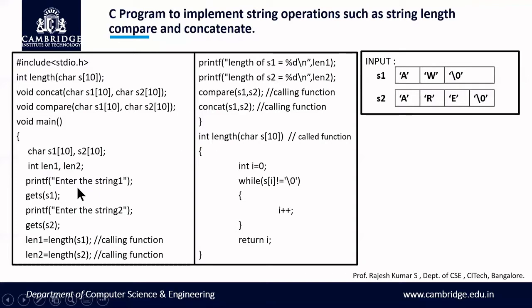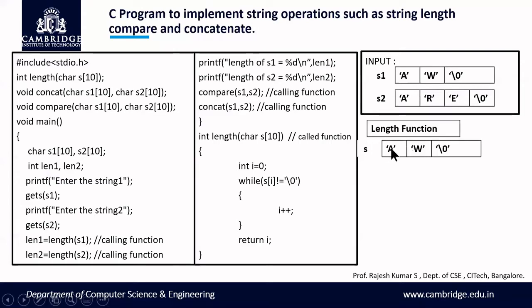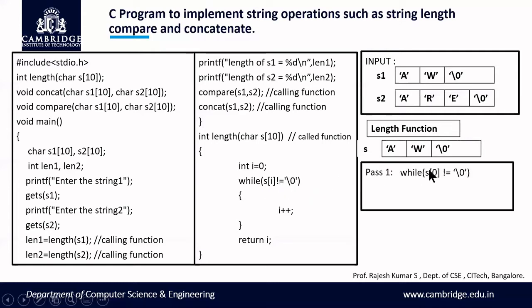In the function definition, the s1 value will be copied into the local s array — so s becomes 'a','w',null. Now execution of the function takes place. We use a variable i initialized to zero to count the number of characters in the array. The while loop condition checks: s[i] != null. In the first pass, s[0]='a', and 'a' is not equal to null, so the condition is true and we increment i.